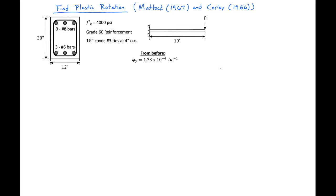We're going to start with the given that we found from our section analysis that our yield curvature is 1.73 times 10 to the negative fourth.